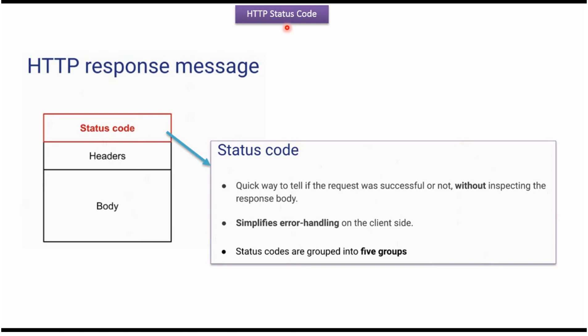In this video tutorial I will explain HTTP status codes. Status code is part of the HTTP response message. Using the status code without inspecting the response body, we can quickly tell if the request was successful or not. And status codes simplify error handling on the client side.